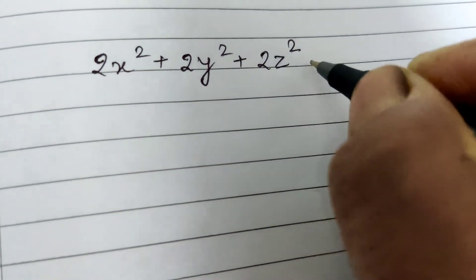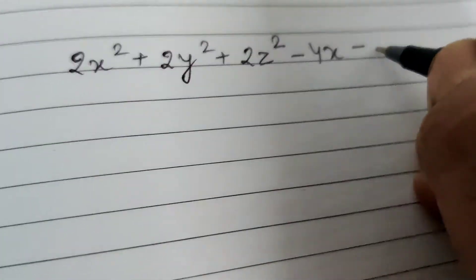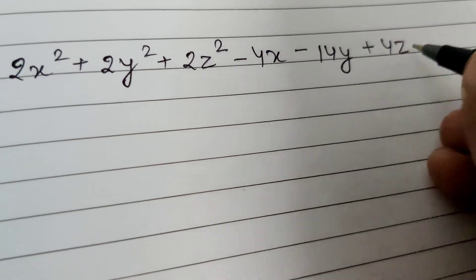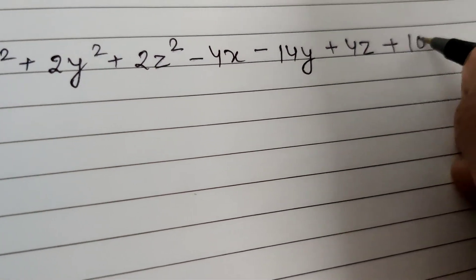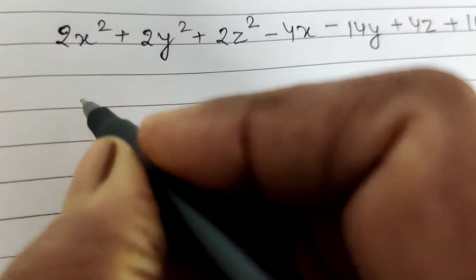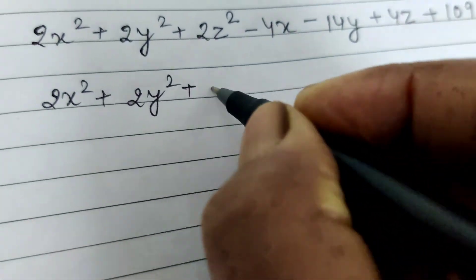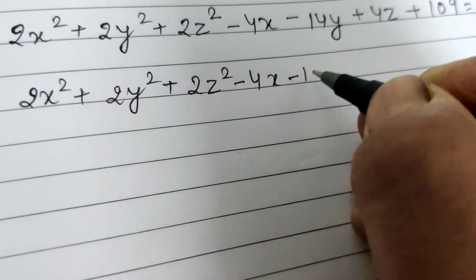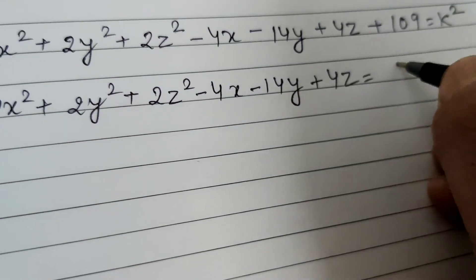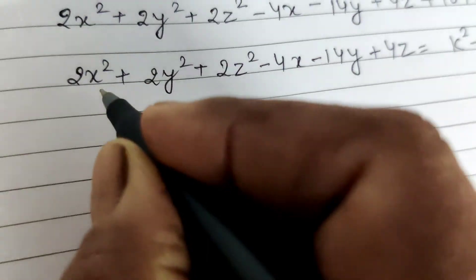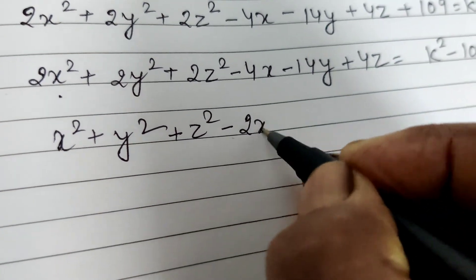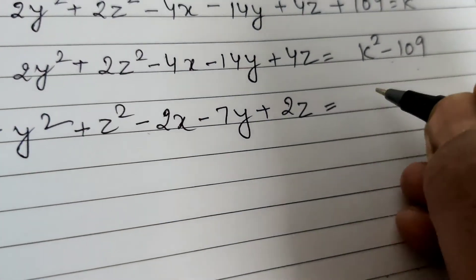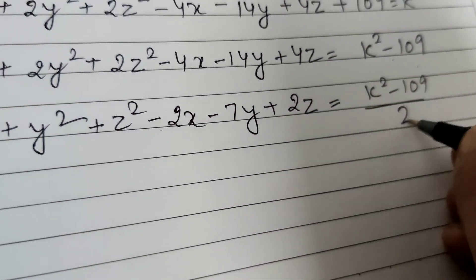Expanding: x²-6x+9 + y²-8y+16 + z²-10z+25 + x²+2x+1 + y²-6y+9 + z²+14z+49 = k². Collecting terms: 2x²+2y²+2z²-4x-14y+4z+109 = k². Dividing by 2: x² + y² + z² - 2x - 7y + 2z = (k² - 109)/2.